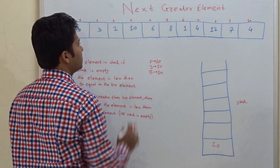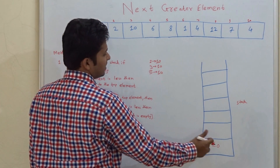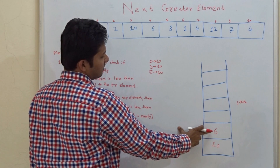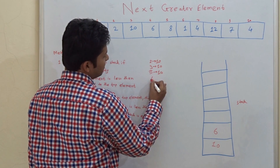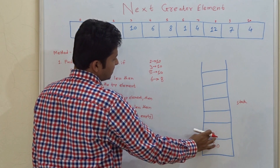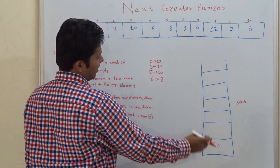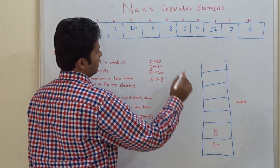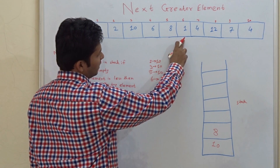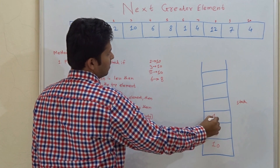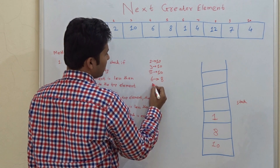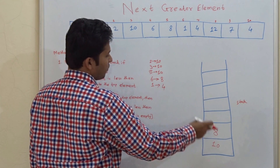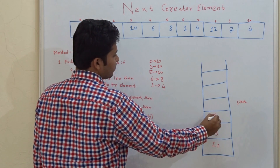Next element is 6. 6 is less than 10, so we push 6. Then 8: 8 is greater than 6, so the next greater element for 6 is 8, and we pop 6. Now we check 8 with 10 — 8 is less than 10, so we push 8. Then we push 1. Next is 4: 4 is greater than 1, so the next greater element for 1 is 4, and we pop 1. Now we check 4 with 8 — 4 is less than 8, so we push 4.